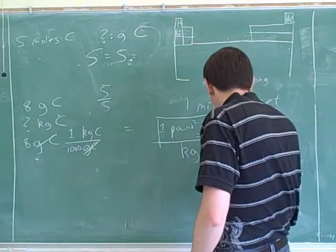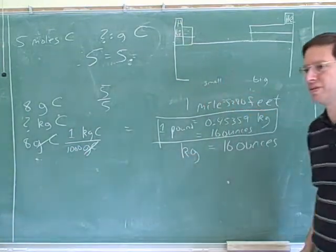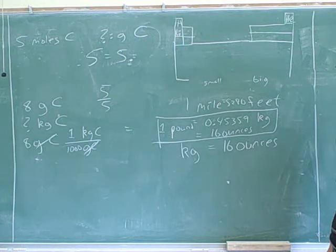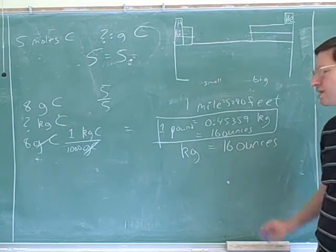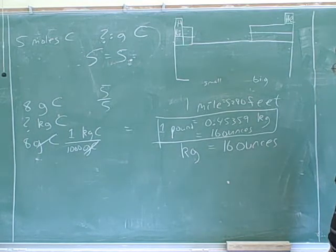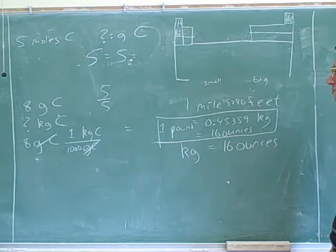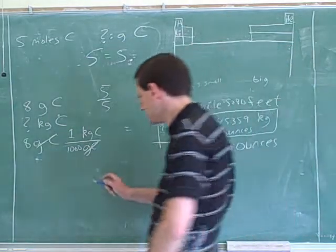So I should say that 16 ounces is equal to how many kilograms? One pound is that much kilogram, and one pound is 16 ounces. So how many kilograms in 16 ounces?